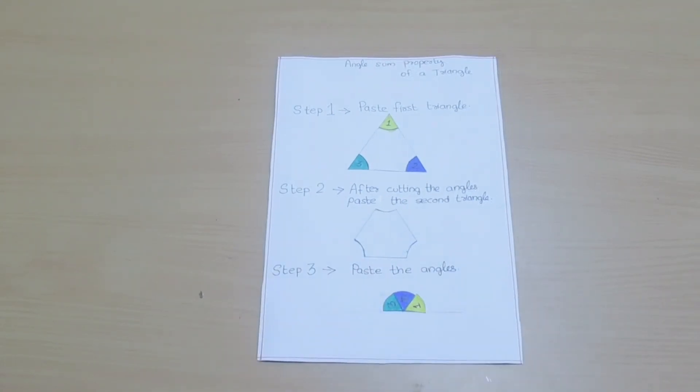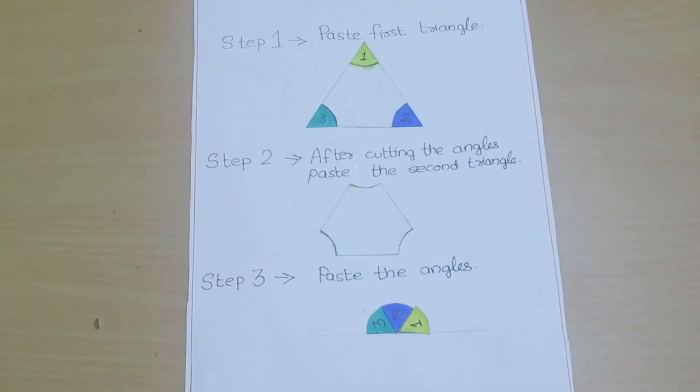When I do this, I notice that these three angles form a straight angle, that is 180 degrees. Hence we have verified that the sum of all three angles of a triangle is 180 degrees.